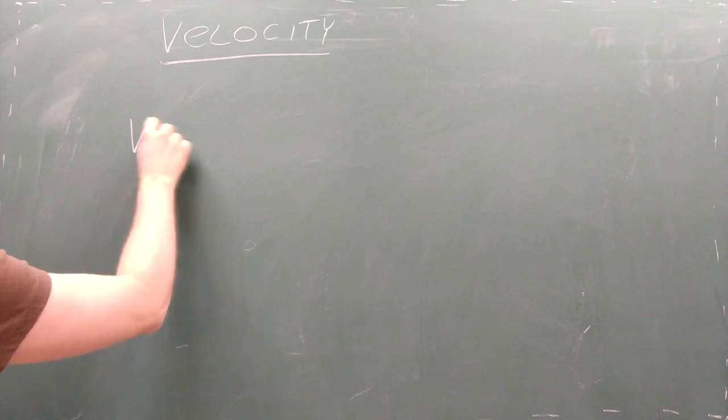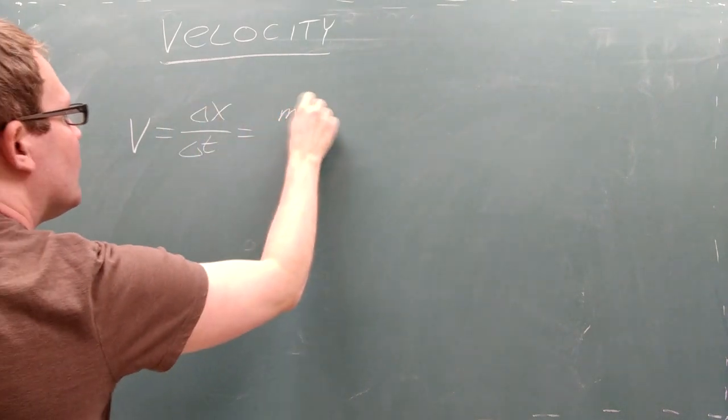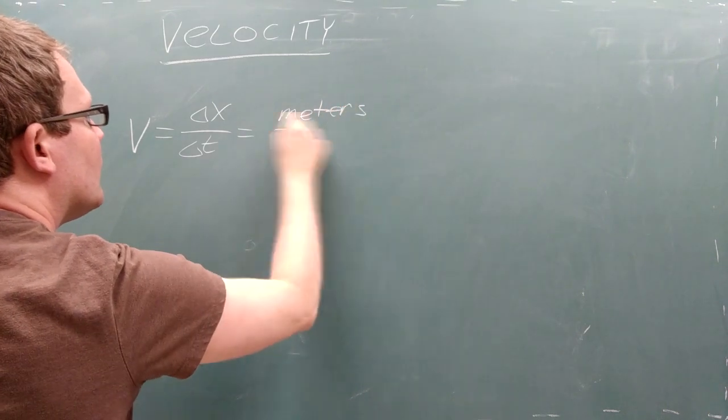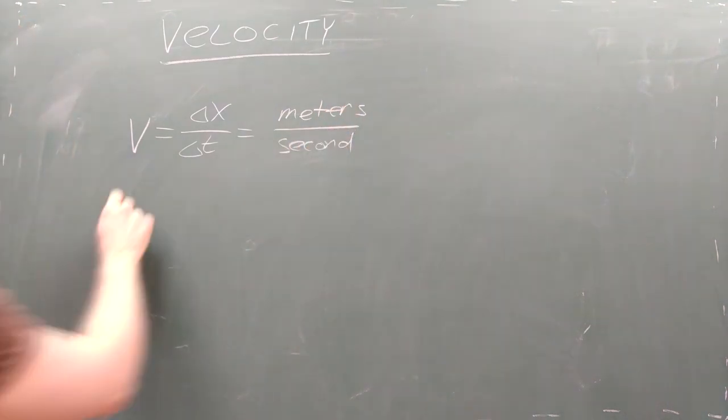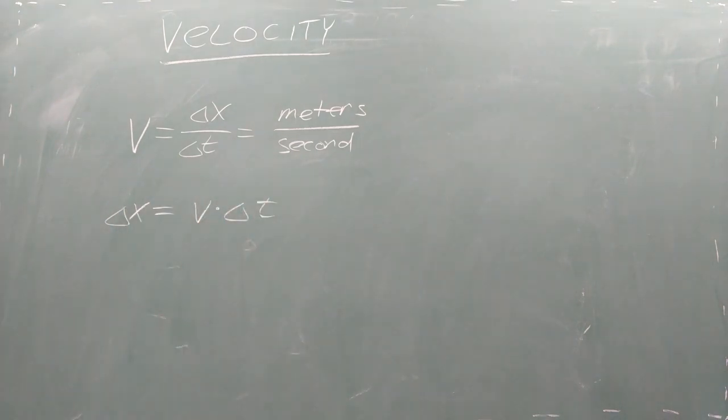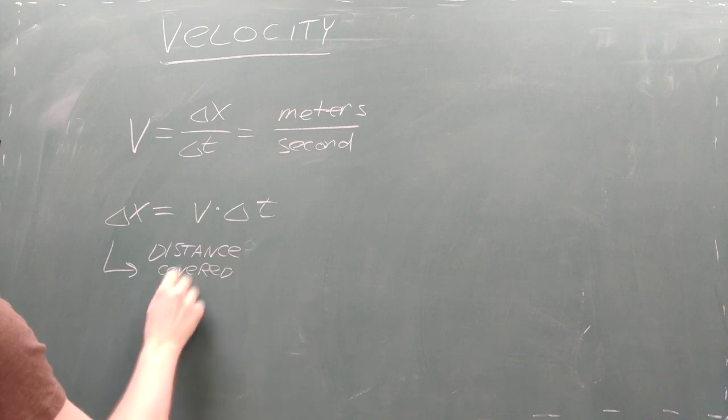Velocity is the amount of distance that an object travels during a journey divided by the amount of time it takes for the object to make that journey. Velocity has units of meters per second, which indicates the amount of distance the object covers during a given amount of time. You can rearrange the velocity equation to see that the displacement of an object's motion is its velocity times the amount of time.